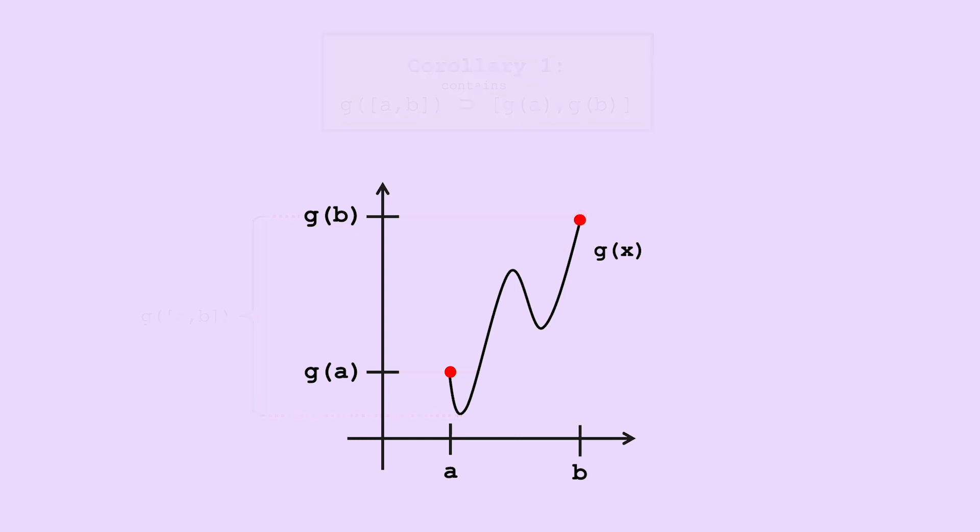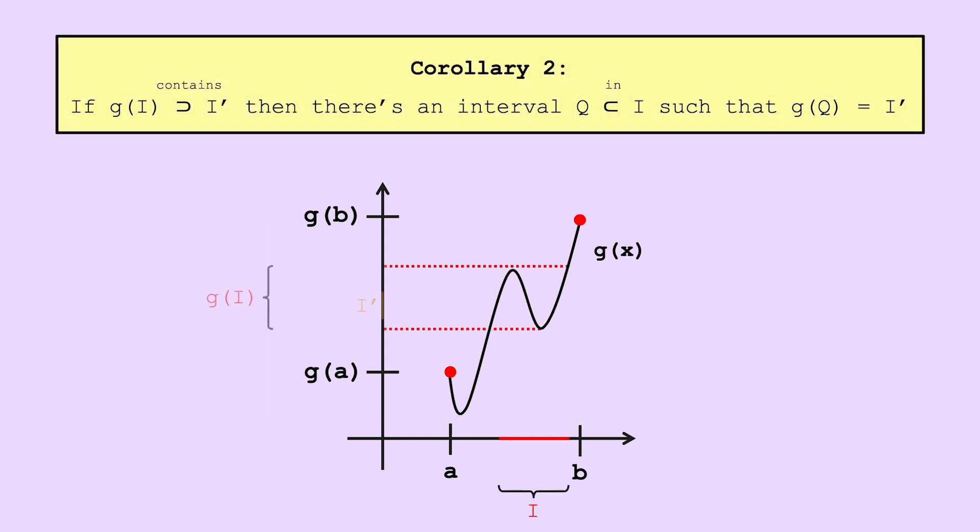Our second corollary: if g of some interval i contains a smaller interval i prime, there's an interval in i, q, such that g of q is exactly i prime. You can almost think of this as an extension of the intermediate value theorem, in that instead of finding a specific point, we're looking for an interval. By the intermediate value theorem, we know there exists p and q in i, such that the interval g of p to g of q is equal to i prime. We'll assume that p is less than q, but you can imagine a very similar argument if p was greater than q. Now, let r be the last value in the interval pq, such that g of r is equal to g of p. And let s be the first value after r, such that g of s is equal to g of q. Then by how we constructed r and s, g of the interval rs is exactly i prime.